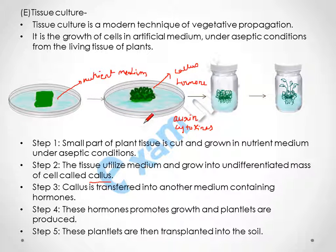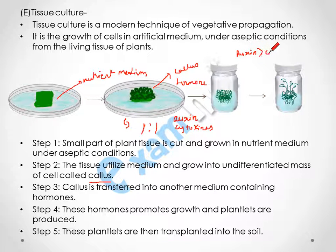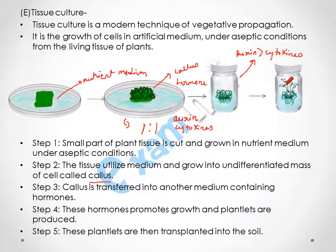In this medium, auxin and cytokinin are in the same ratio, which helps in developing the callus. After that, when auxin is more than cytokinin, roots develop faster, followed by shoots. When both stems and roots are developed, each plantlet is transplanted into soil to grow as an individual plant.